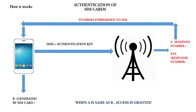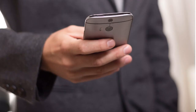The same process is done with the authentication key to generate another response number B by the SIM card. If the network's number A matches the SIM card's number B, then the SIM card is declared legal and access is granted. This data not only determines which network to connect to, but also acts as the login credentials which allow a phone to use that network.